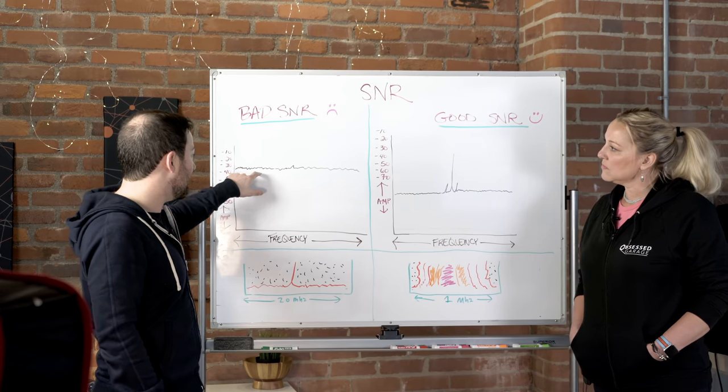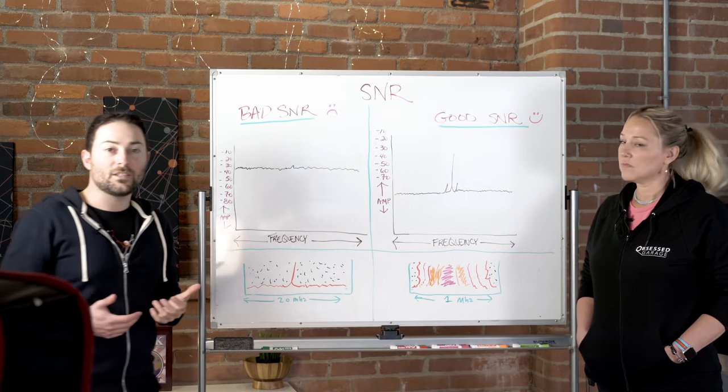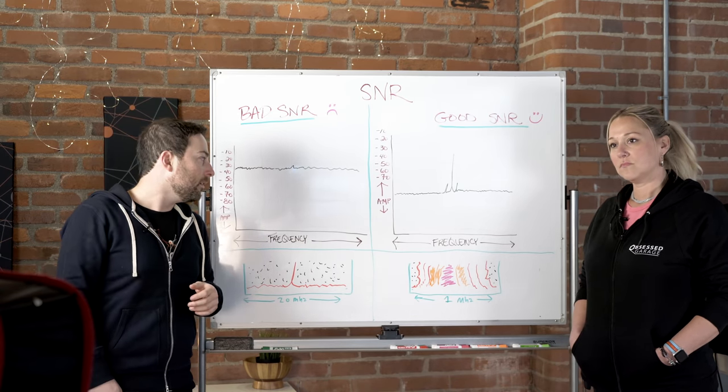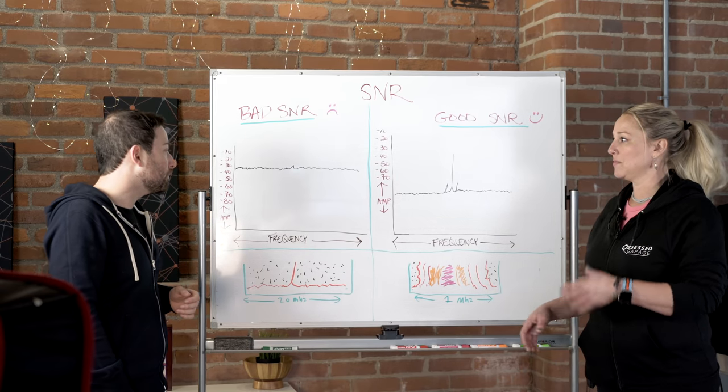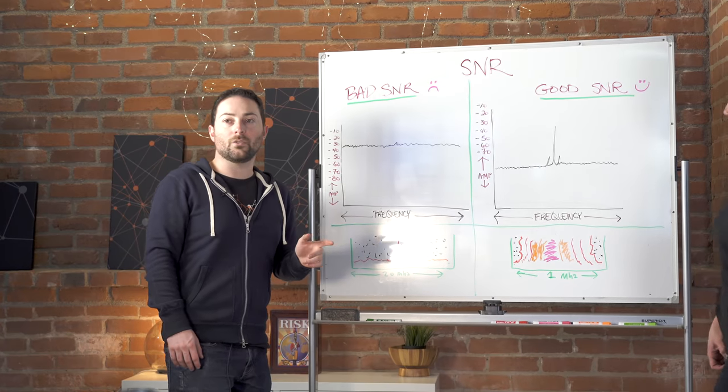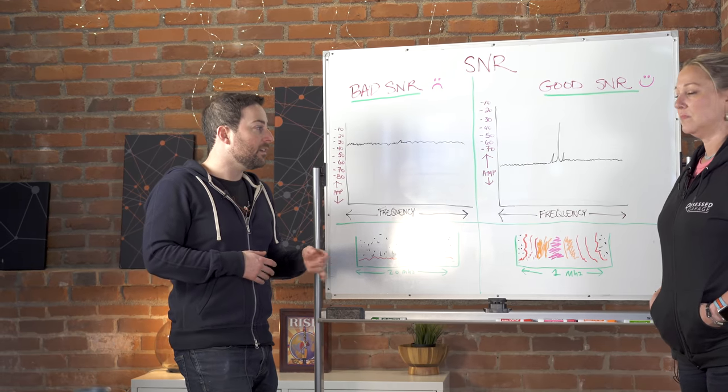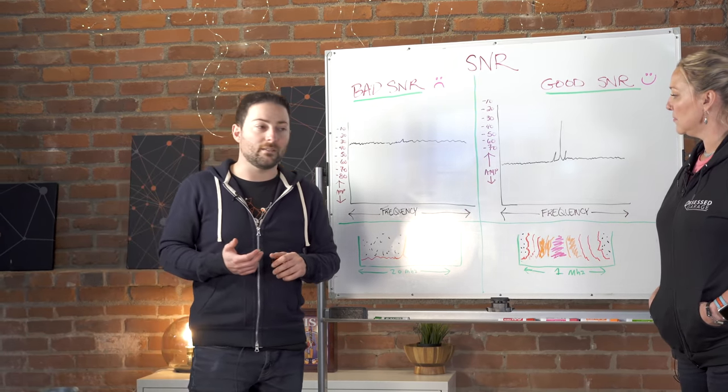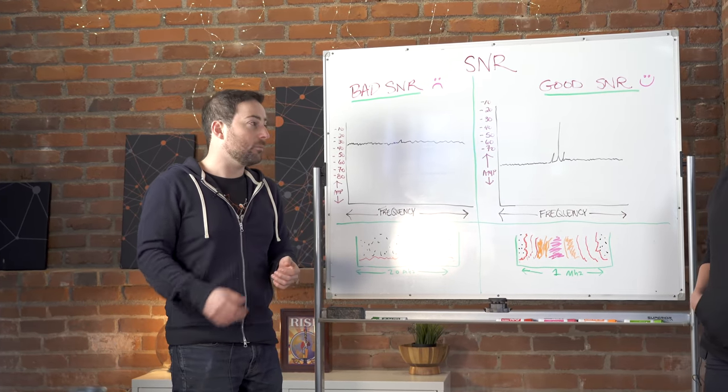Now, this line here is the noise floor. And what the noise floor is, is the volume level, essentially, of everything that you don't care about. The ambient noise we're talking about or background music or ambulances or whatever. Exactly. Now, Mindy asked a question earlier, which is why does Thea care about having a good SNR?